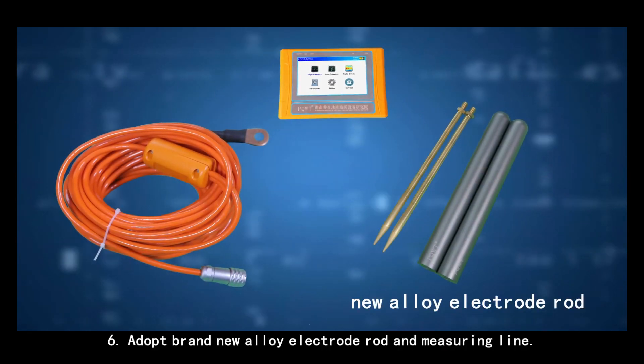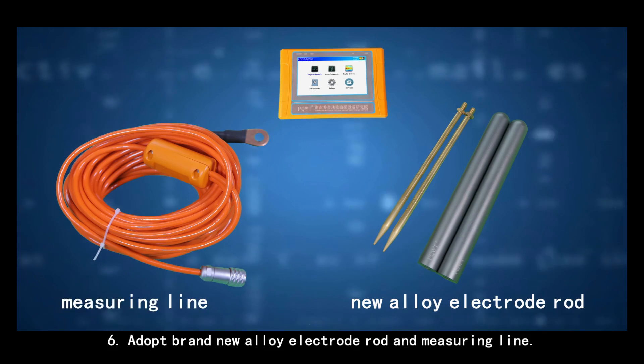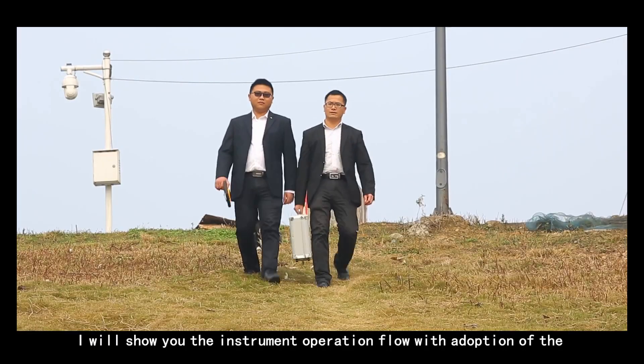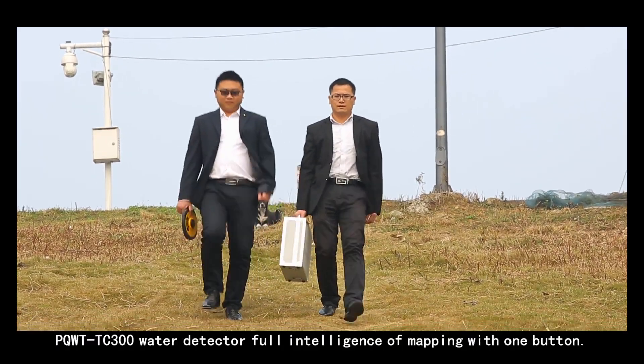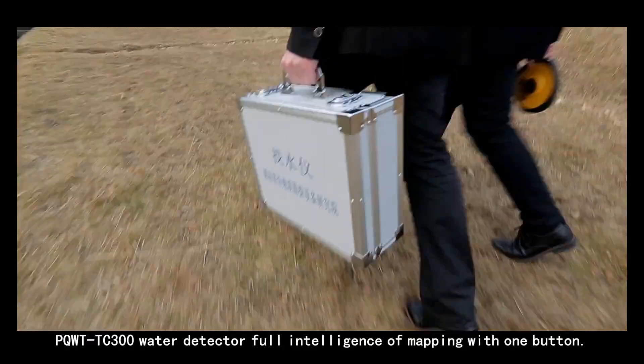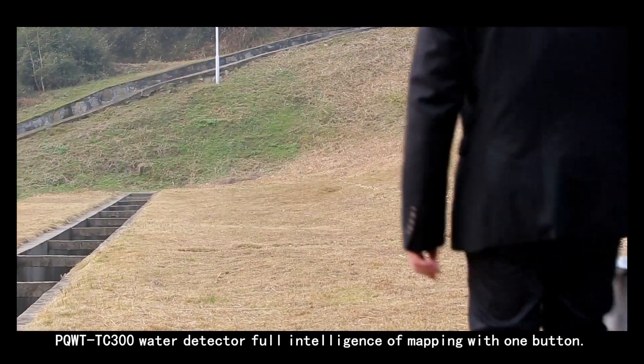Adopt a brand new alloy electrode rod and measuring line. I will show you the instrument operation flow with adoption of PQWT-TC300 water detector full intelligence of mapping with one button.